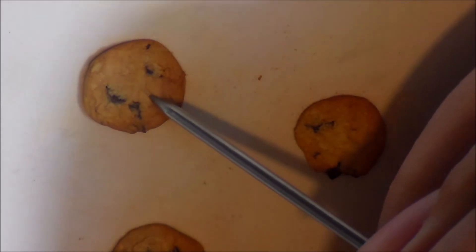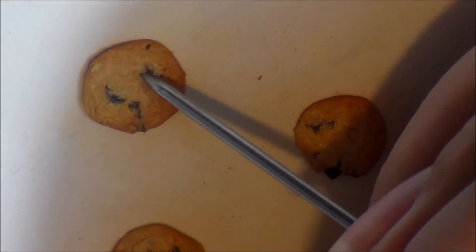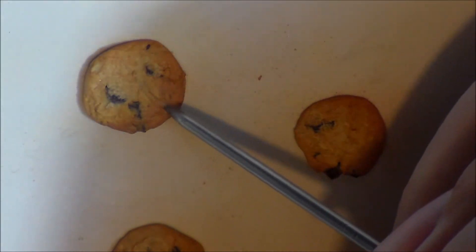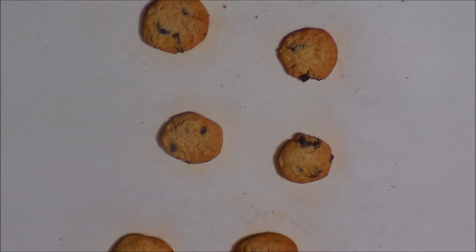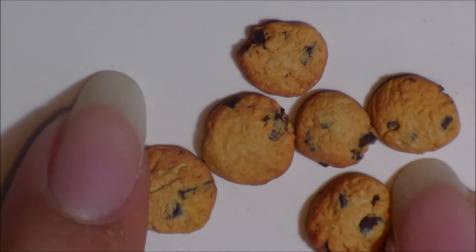Go back with the aluminum foil and needle tool to add more texture if you would like. Then bake according to your clay's package instructions. Then your miniature cookies are complete.